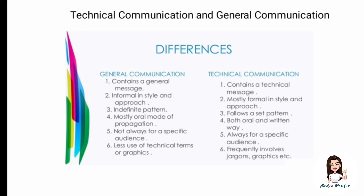On the other hand, technical communication contains a very precise, technical message. It is mostly formal in style, very systematic, with a specific set pattern. It can be both oral or written. It has a specifically trained audience, and it uses jargons or graphics that only those limited people will understand. A jargon is a technical term — words used within a community or organization that only they will understand.